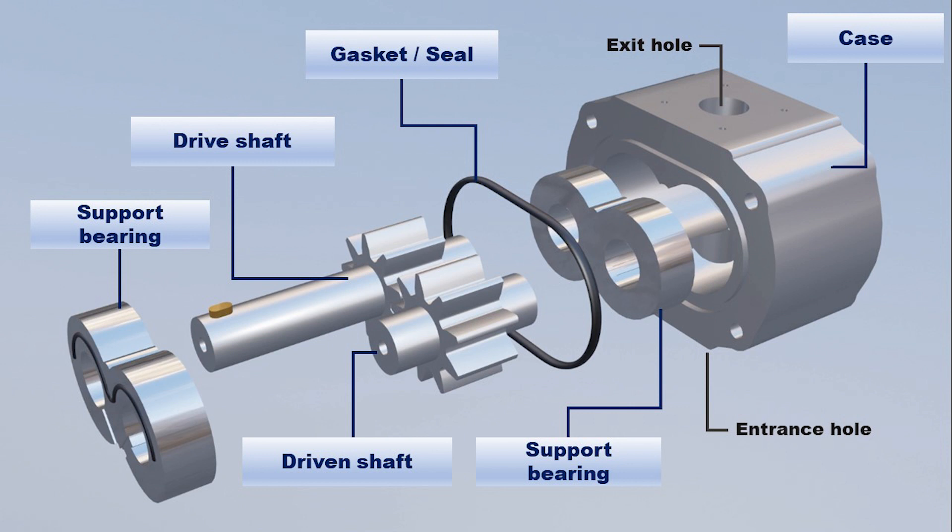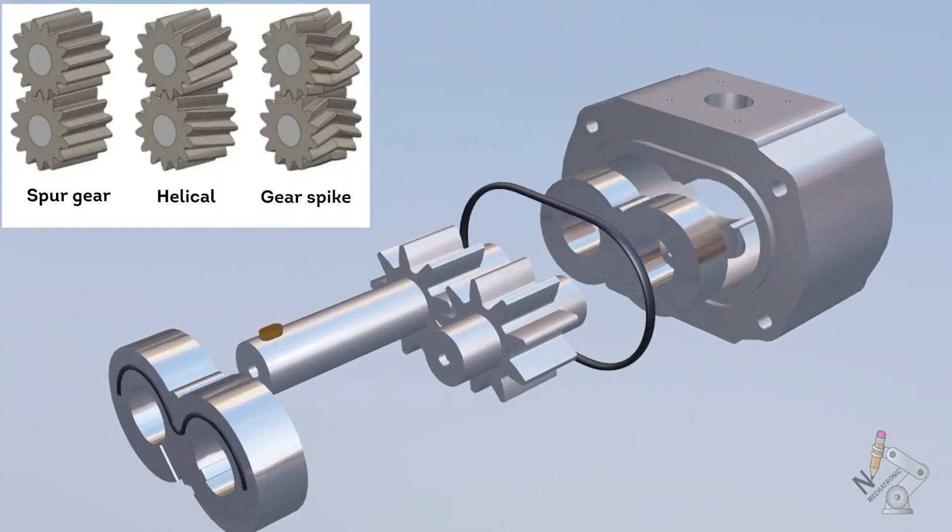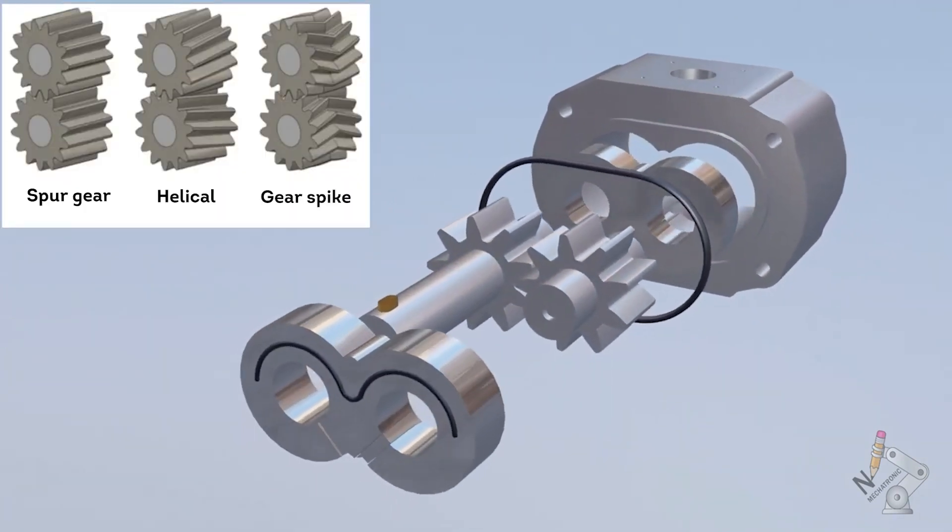Gasket or seal. This component is located between the casing and the covers of the pump and serves to isolate or prevent fluid from leaving the pump. As for the types of gears that the pump has, they can be straight, helical or herringbone gears. The latter is also known as angular tooth gears.